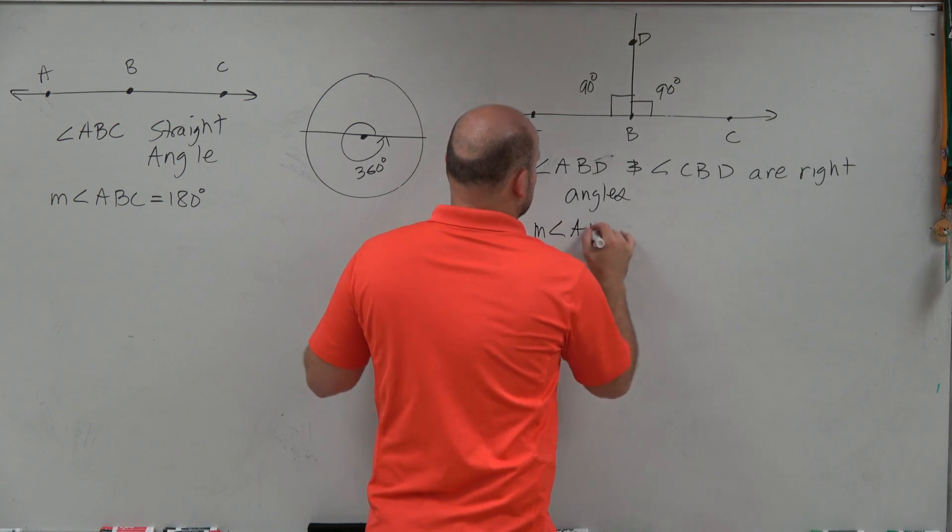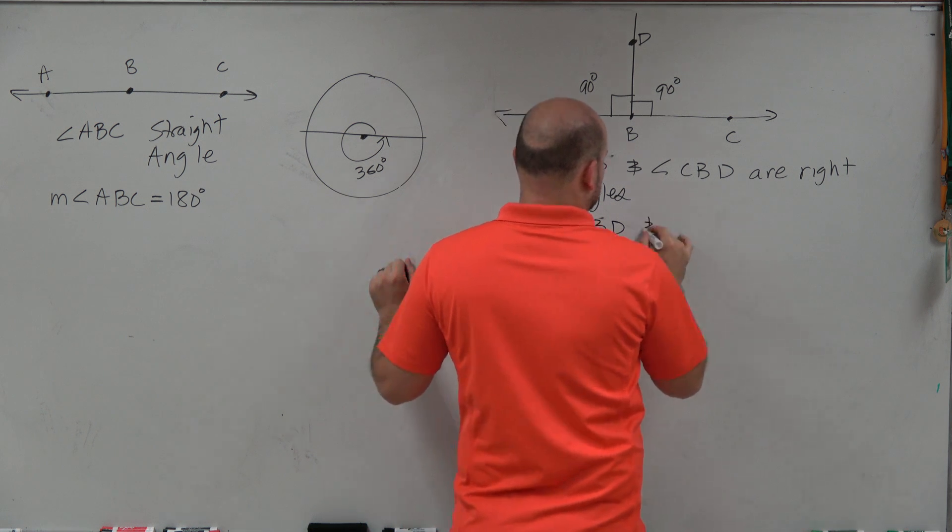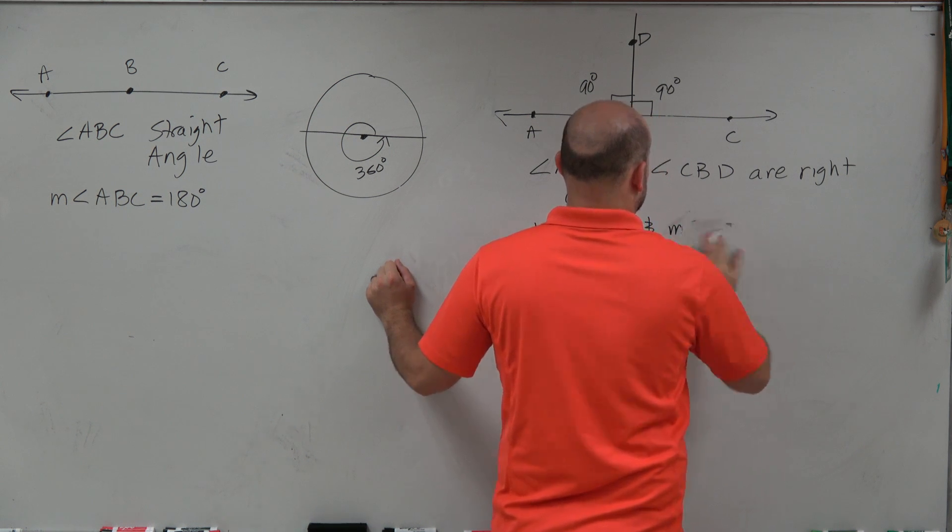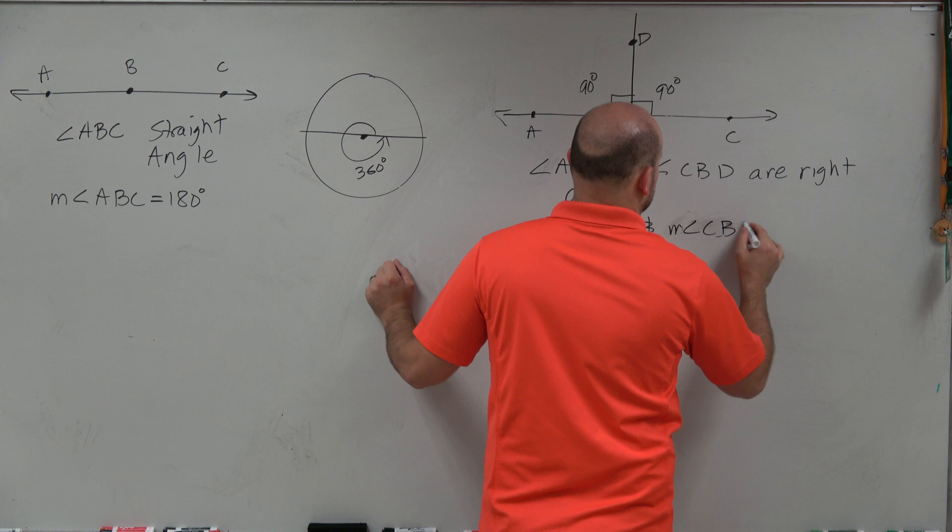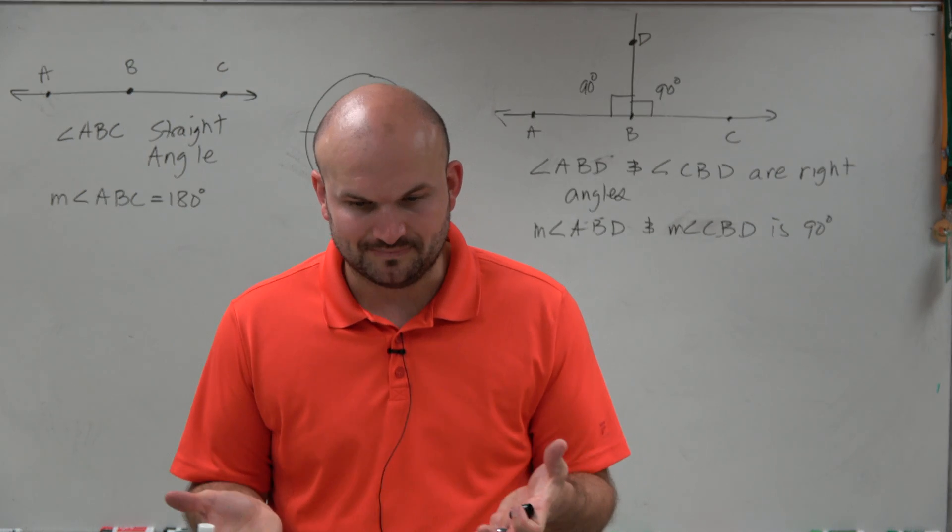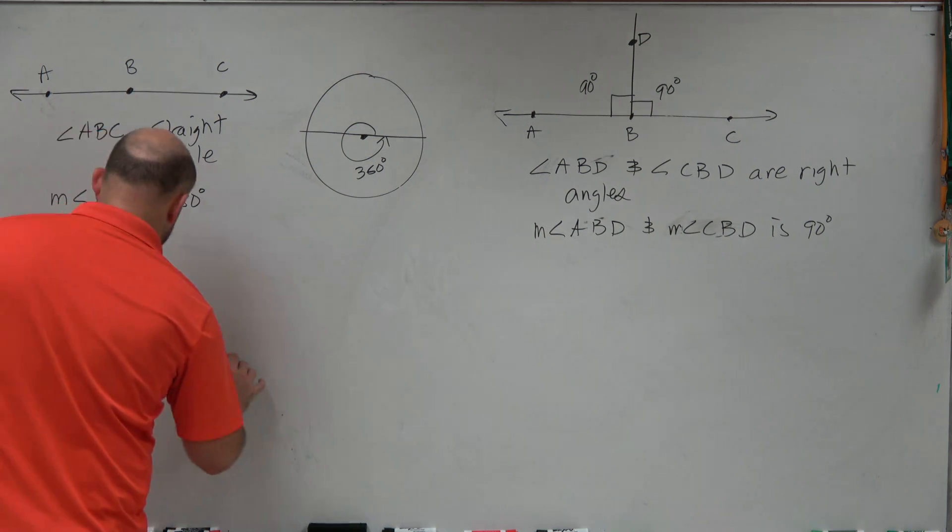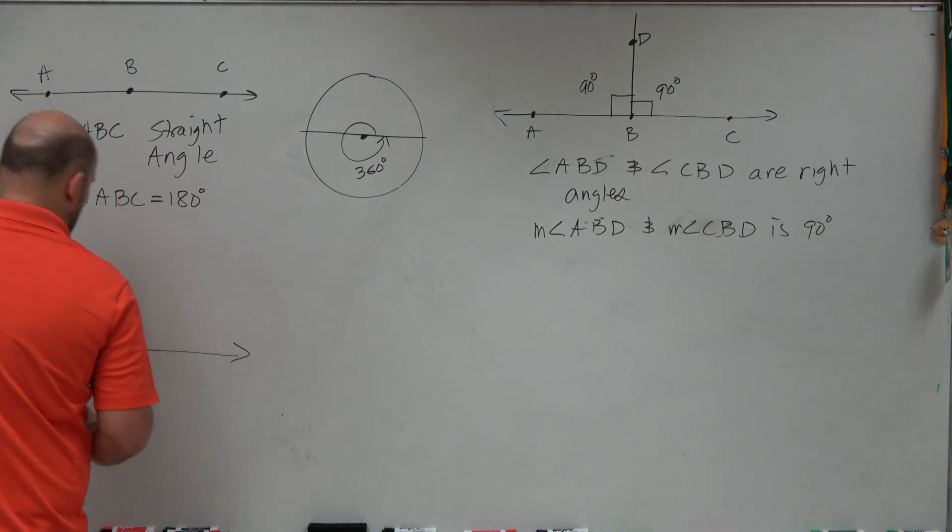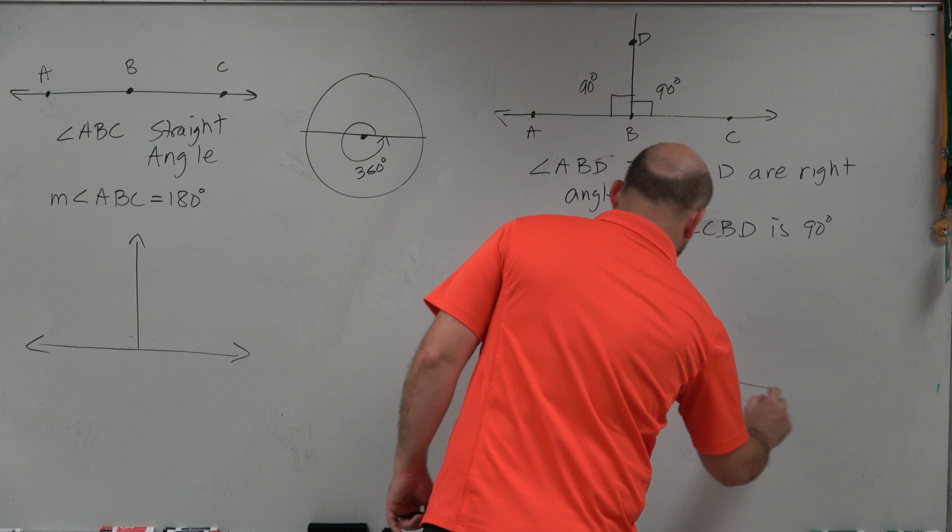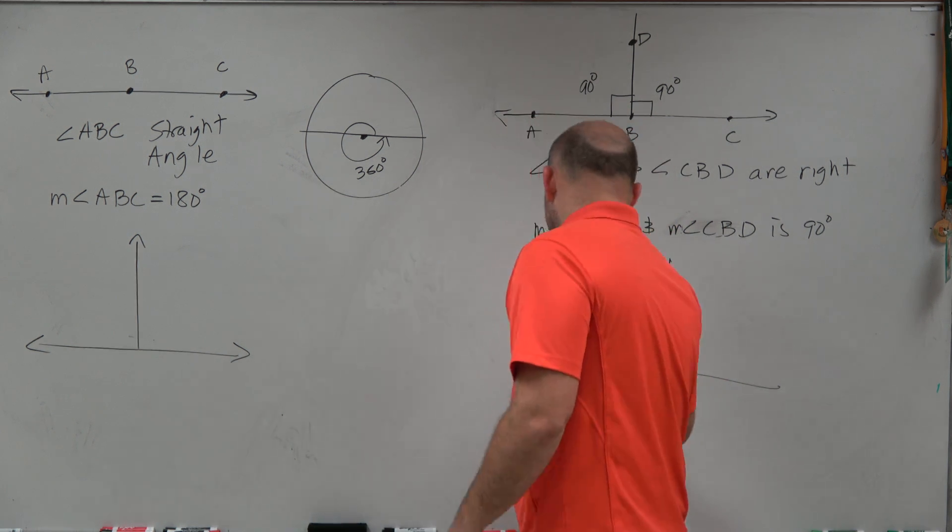So we can say that the measure of ABD, and measure of CBD, is 90 degrees. So we kind of have this base point now. Going from the circle, we kind of have the straight angle. We have the straight angle, and then we have our right angles. So straight angle, and then right angles. And that's going to be kind of the foundation for our next two angles.